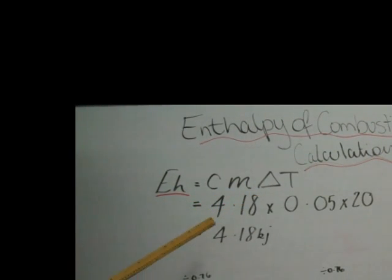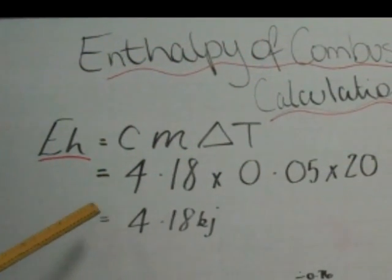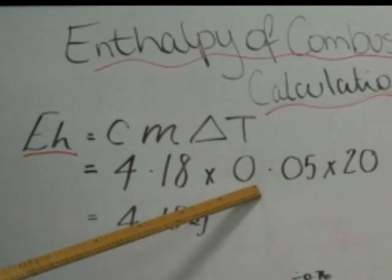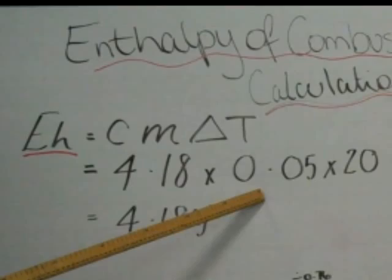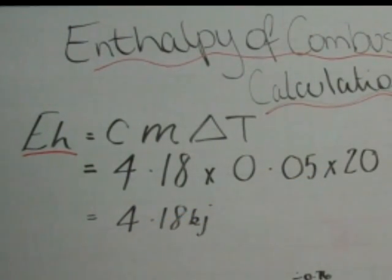Where C is equal to the specific heat capacity of the water and has a value of 4.18, M equals the mass of water being heated and in this experiment it is 0.05 kilograms, and delta T is equal to the rising temperature in Celsius. So EH is equal to 4.18 times 0.05 times 20, which equals 4.18 kilojoules.